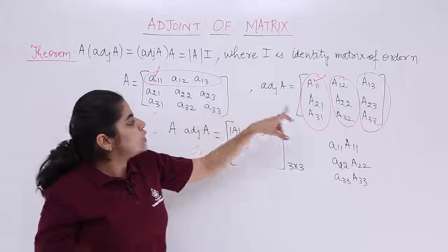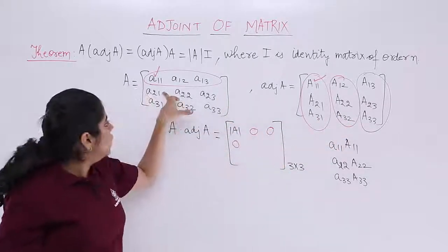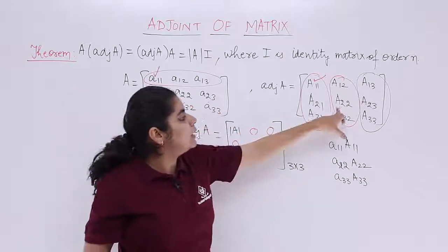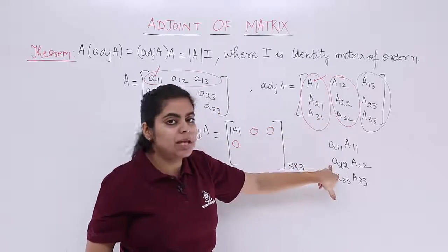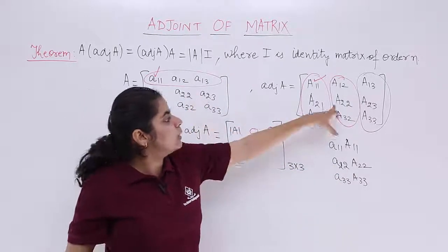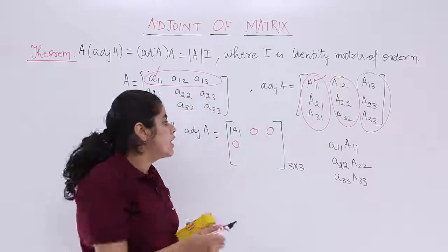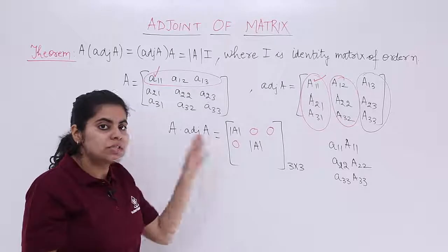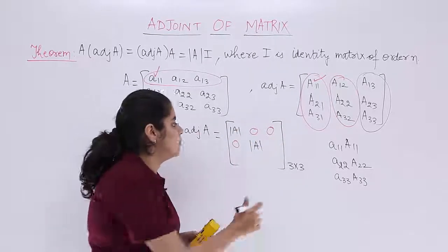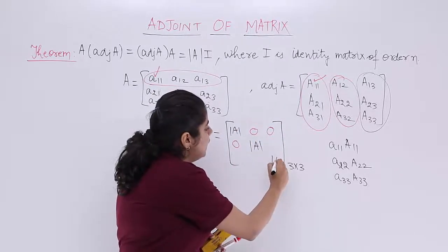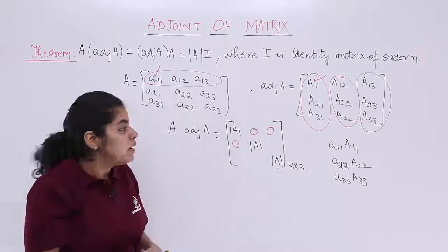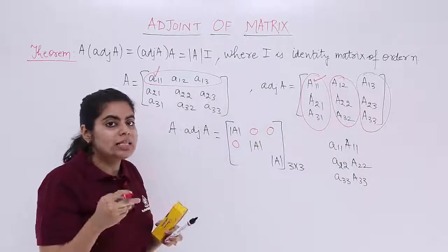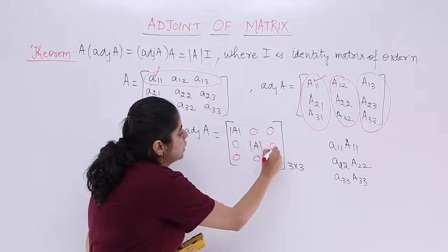For the second row and second column: a21·A12 = 0, but a22·A22 gives det(A) since they match. Similarly solving for the second row third column and remaining elements, we get det(A) at the (3,3) position where A33 is multiplied by A33. All other off-diagonal cases always give 0.